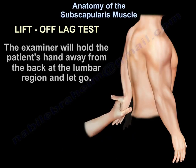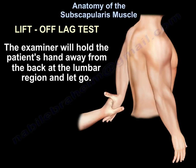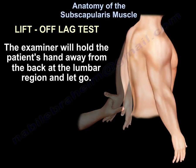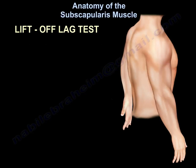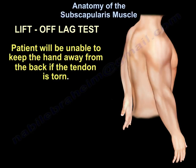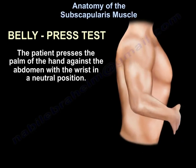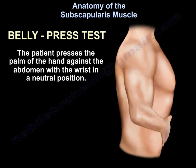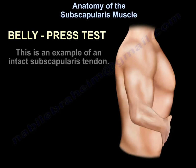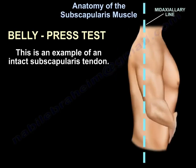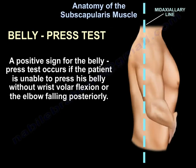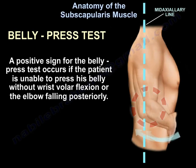There is another test called the lift-off lag test. The examiner will hold the patient's hand away from the back of the lumbar region and let go. The patient will be unable to keep the hand away from the back if the tendon is torn. For the belly press test, the patient presses the palm of the hand against the abdomen with the wrist in a neutral position. A positive sign occurs if the patient is unable to press the belly without wrist volar flexion or the elbow falling posteriorly.